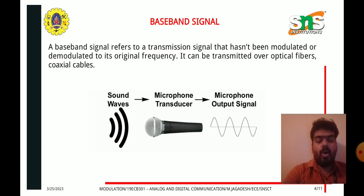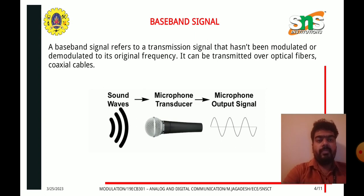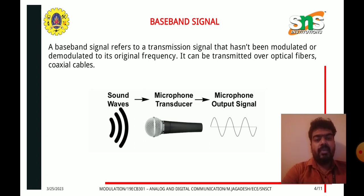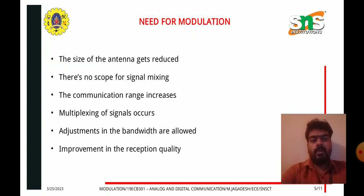The signal before modulation is called a baseband signal — that is, the signal without the carrier signal. For example, when you talk in front of a microphone, the microphone converts the sound to an electrical signal. That actual electrical signal is called the baseband signal. When it is combined with the carrier signal, that is called the modulation process.